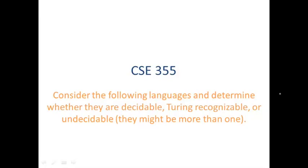In this video, we will consider the following languages and determine whether they are decidable, Turing recognizable, or undecidable. Note they might be more than one. If something is decidable, it's most definitely Turing recognizable. Also, it's possible for something to be undecidable yet Turing recognizable.